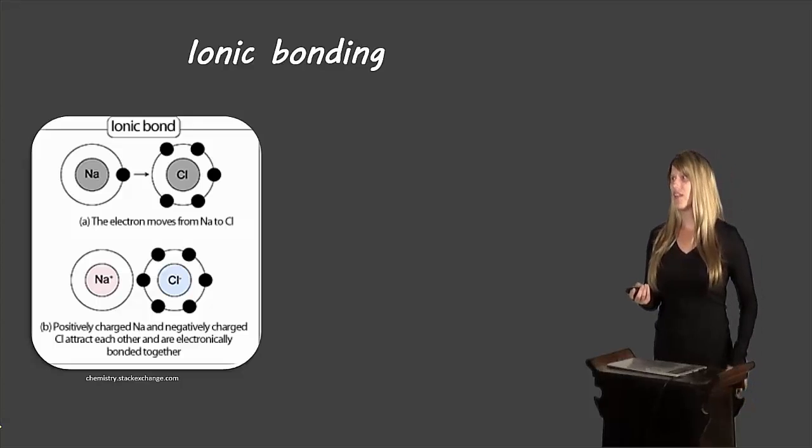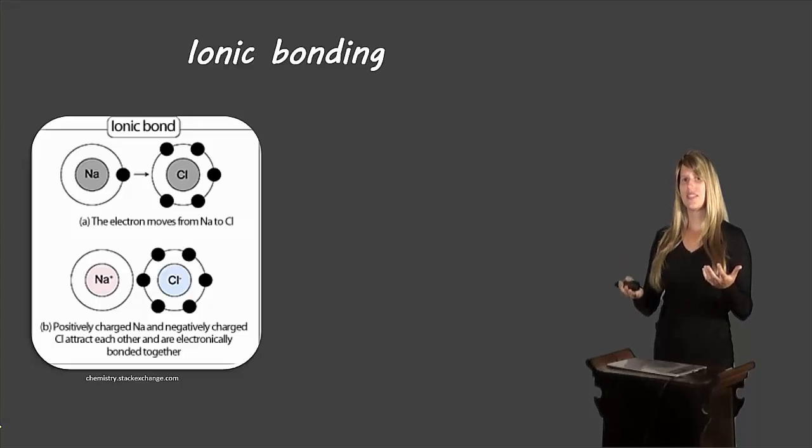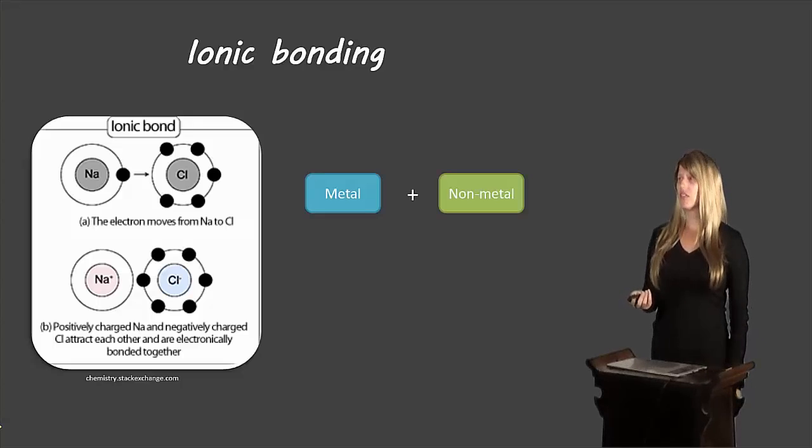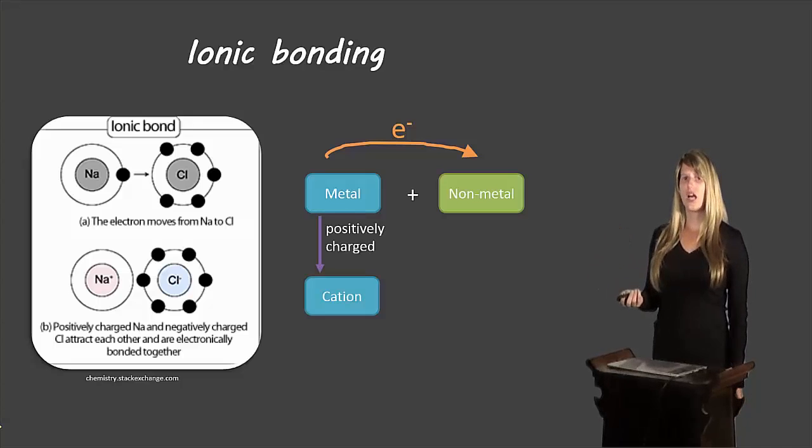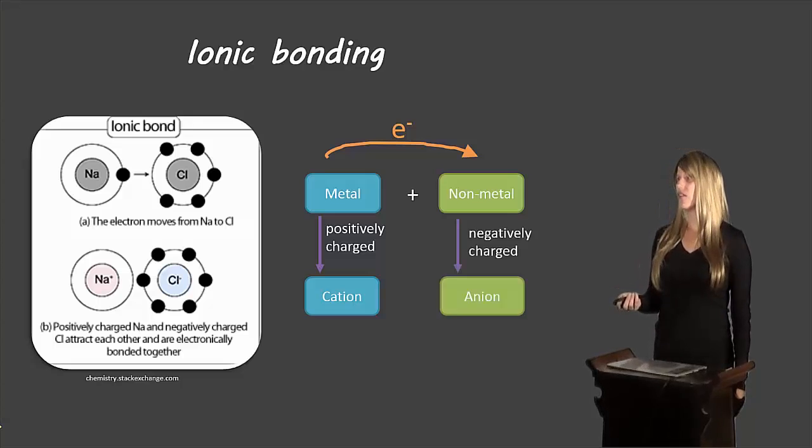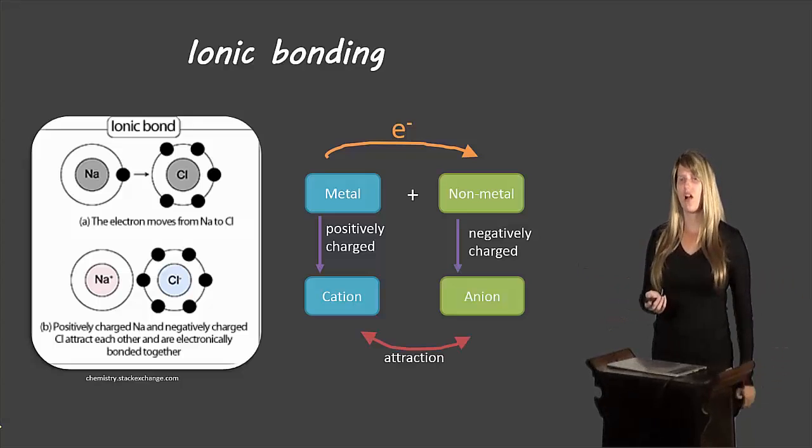So first of all, ionic bonds. The characteristic of ionic bonds is that electrons are transferred from a metal to a non-metal. The metal becomes positively charged, the non-metal becomes negatively charged, and those negative and positive charges are attracted to each other and so that's what makes the compounds stick together. So here we have a metal and a non-metal. Electrons are transferred from the metal to the non-metal. The metal becomes positively charged, and we call ions that are positively charged cations. The non-metal becomes negatively charged, and ions that are negatively charged are referred to as anions. And then the cation and anion are attracted together to bring the compound together.